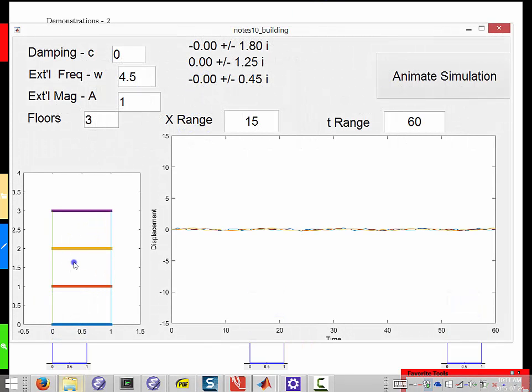Here we have our building in full color splendor, and we also have the resulting motion of the various floors. Notice that we start here with a frequency of 4.5 radians per second, and that does not align with any of the eigenvalues that we found earlier. And so what happens if we try to animate that is we're pushing on this building, and it's hard for it to respond.